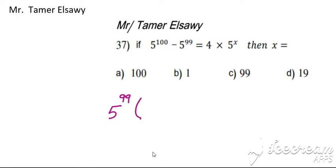We can divide. 5 power of 100 divided by 5 power of 99 is 5. We subtract 100 minus 99 is 1. Minus 5 power of 99 divided by 5 power of 99, we have 5 power of 0.